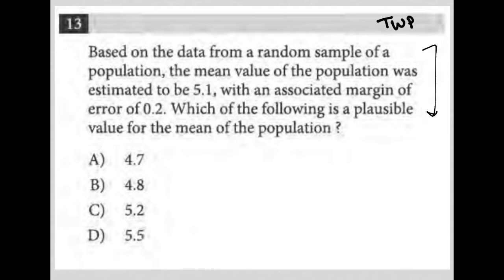So, the very first sentence here says, based on the data from a random sample of a population, the mean value of the population was estimated to be 5.1. So, I'm going to write that down. Mean 5.1.